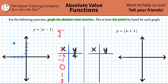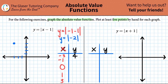Next, y equals the absolute value of negative one minus one. You're getting the drift — y equals negative two inside, and the absolute value always takes that number and makes it positive. So for an x of negative one, the output y equals two.